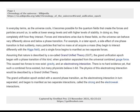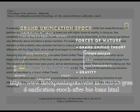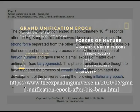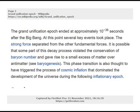Forces and interactions arise due to these fields, so the universe can behave very differently above and below a phase transition. Assuming that nature is described by a grand unified theory, the grand unification epoch began with a phase transition when gravitation separated from the universal combined gauge force. This caused two forces to now exist: gravity and an electrostrong interaction. There is no hard evidence yet that such a combined force existed, but many physicists believe it did. The physics of this electrostrong interaction would be described by the grand unified theory. It ended with a second phase transition as the electrostrong interaction separated and began to manifest as two separate interactions — the strong and the electroweak interactions. The grand unification epoch ended at approximately 10 to the minus 36 seconds after the Big Bang.